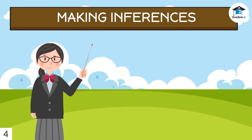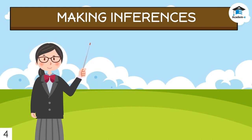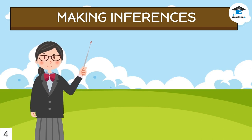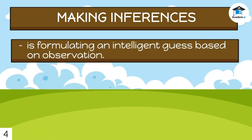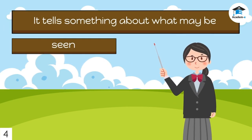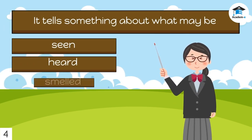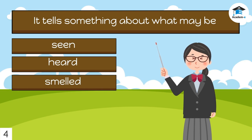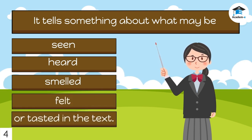Most of the time the meaning of a sentence or paragraph is directly stated. But sometimes it is not clearly stated, or it is implied. If that happens, we need to make inferences. Making an inference is formulating an intelligent guess based on what we observe in the text — what may be seen, heard, smelled, felt, or tasted. It requires keen observation.